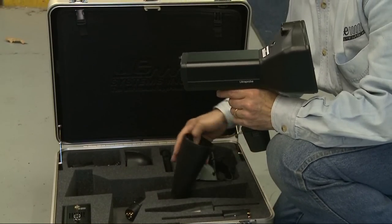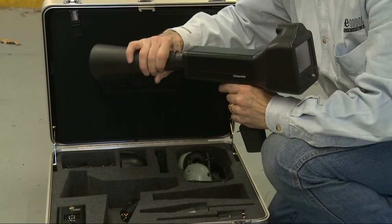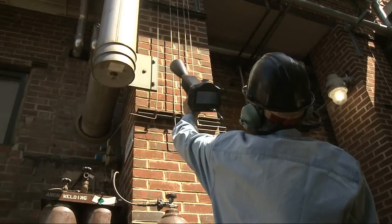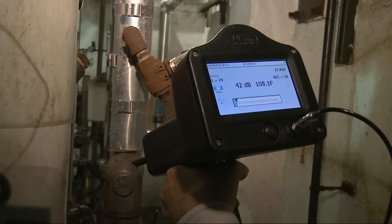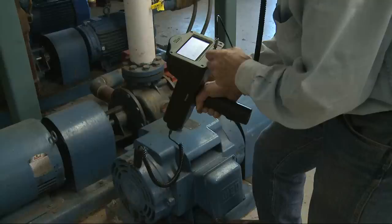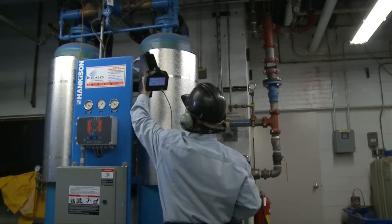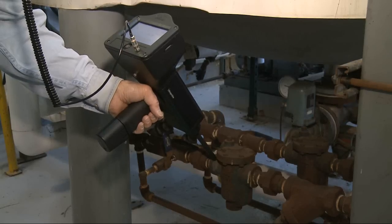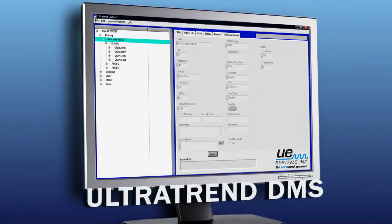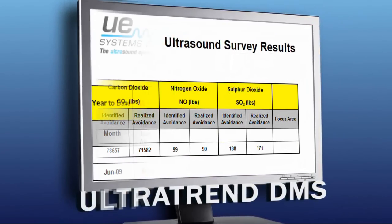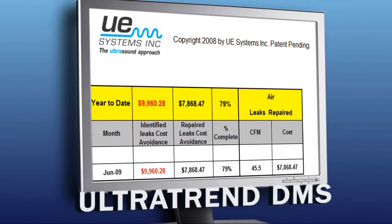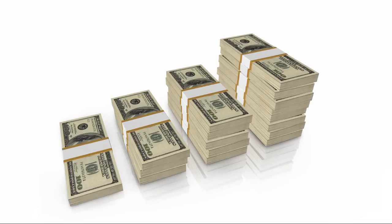The UltraProbe 15000 Touch is so sophisticated, it's easy to use. You'll be amazed at how quickly your improved inspection capability will pay off by helping increase asset availability throughout your plant while reducing energy waste. Plus, the reports you'll generate will help management understand how important your ultrasonic condition monitoring program is to improving company profitability.